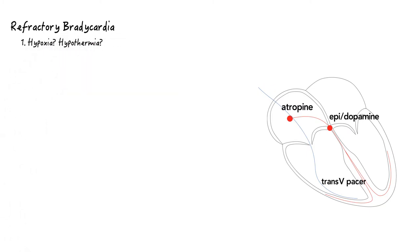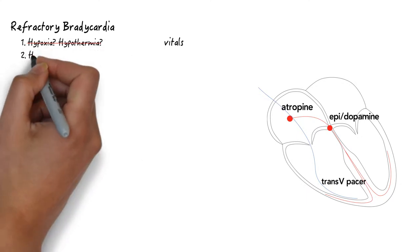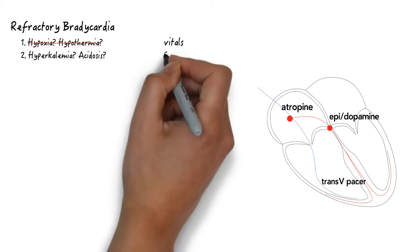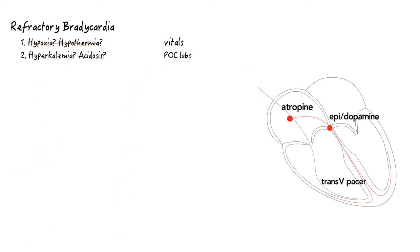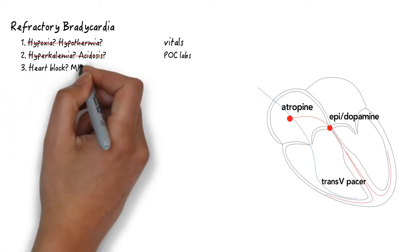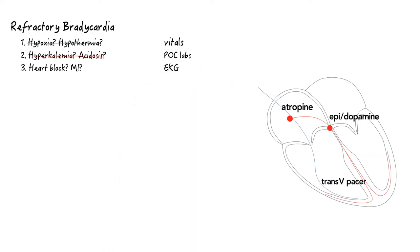So you take that original list. You've ruled out hypoxia and hypothermia because you got a full set of vitals and are treating appropriately. You've ruled out hyperkalemia and acidosis thanks to your point-of-care labs. You've obtained an EKG, which shows no obvious MI and no obvious heart block.